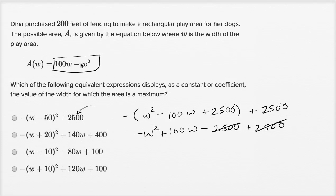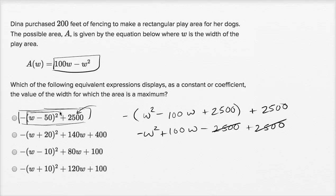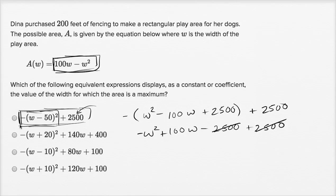Now, what they're asking is which of these forms makes it easy to find the maximum value. Let's look at this first one. The part W minus 50 squared is always going to be non-negative, because squaring something gives a non-negative result. But then if you take the negative of it, it's going to be non-positive — less than or equal to zero. And then you have plus 2,500. So if you want to maximize this expression, you want this part to be equal to zero.